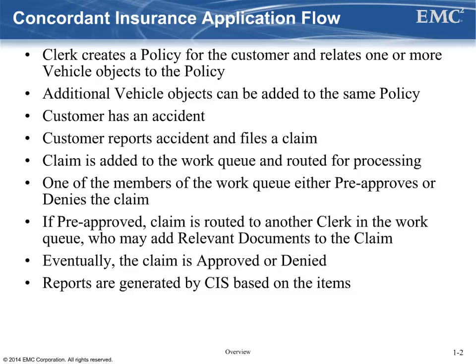A work queue allows multiple people to acquire and complete tasks in the queue. A claim task is acquired and relevant documents may be added to the claim. Eventually, another clerk will acquire the task and mark it as either approved or denied. When the claim status reaches certain states, the object is passed along to the CIS server to prepare for some historical queries.